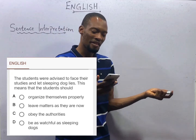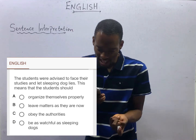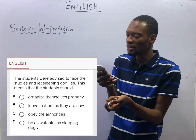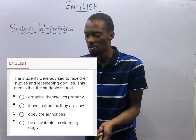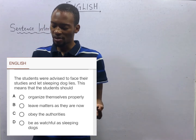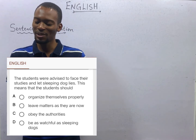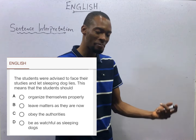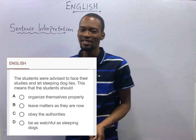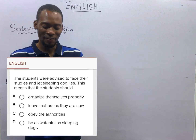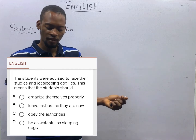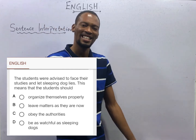Option A says 'organize themselves properly.' Option B means 'leave matters as they are now.' Option C is 'obey the authorities.' Option D is 'be as watchful as sleeping dogs.' Any option that gives the literal meaning of the statement is 99.9% of the time not correct. The fact that we are talking about letting sleeping dogs lie doesn't really mean literal dogs. To let sleeping dogs lie means to leave matters as they are now.